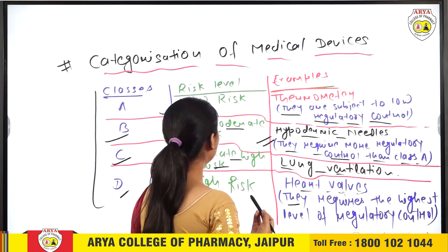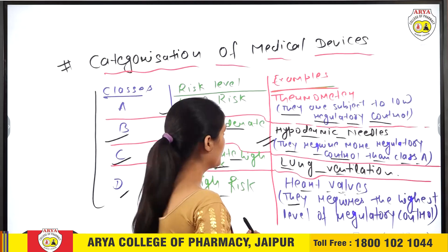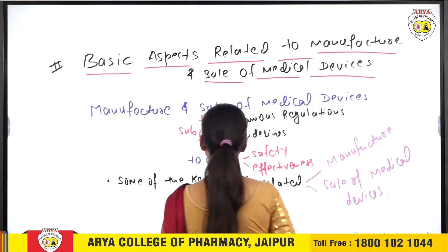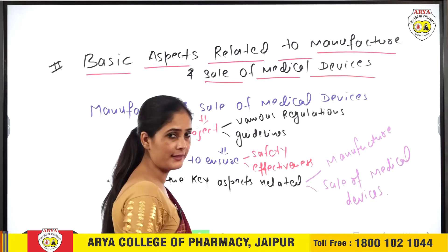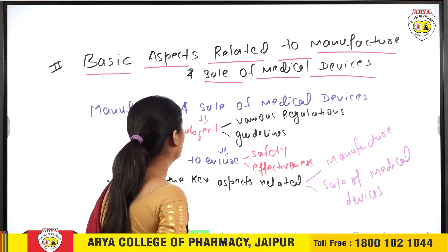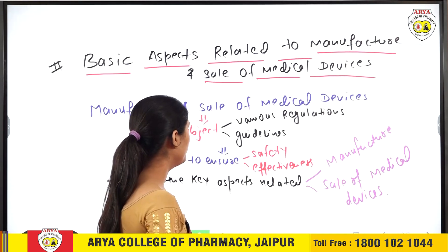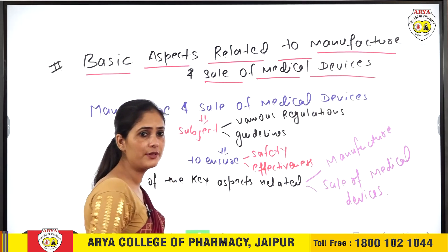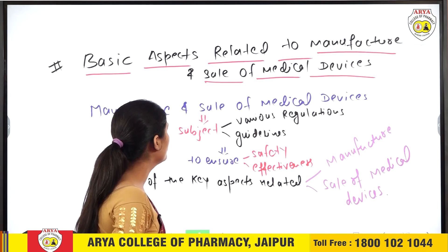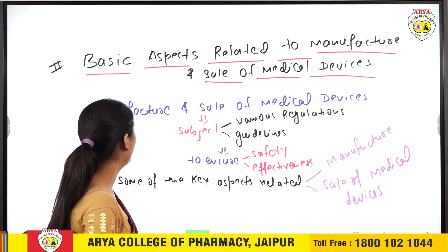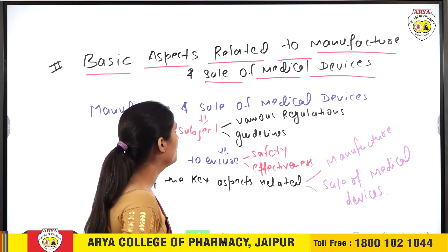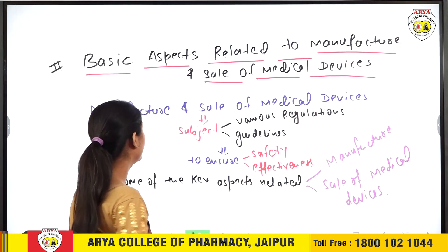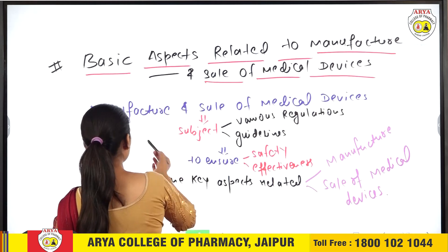These are the medical devices and their categories and examples. Now next we will see the basic aspects. This means for manufacturers who are manufacturing or selling medical devices, there are certain parts related to manufacturers and certain parts related to sale of medical devices.